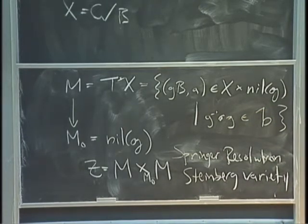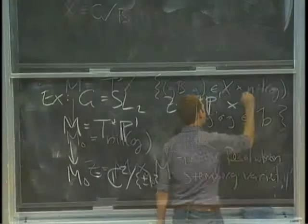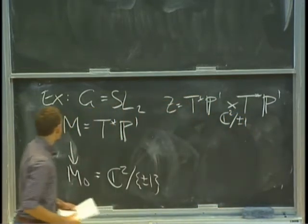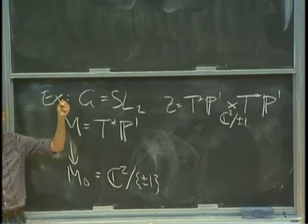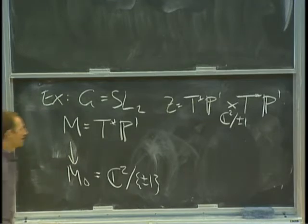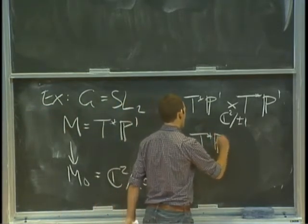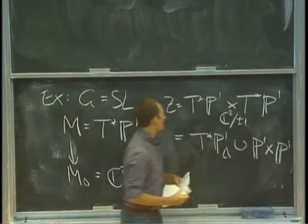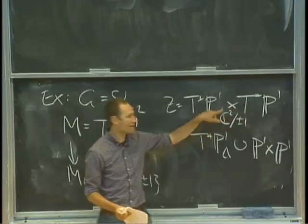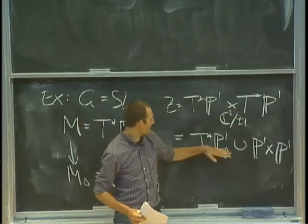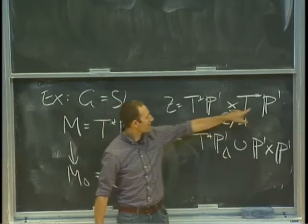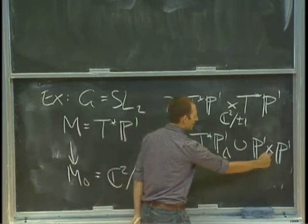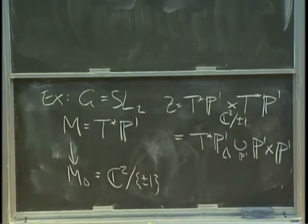In the SL2 example, Z is T* P1 cross T* P1 over C2 mod plus or minus 1. The map from M to M0 takes the zero section P1 and collapses it, and otherwise it's one-to-one. The fiber product means something in here and something in here that go to the same place — either they're the same element, or both lie in the zero section and get collapsed to the cone point. So we get T* P1 union P1 cross P1, touching along the diagonal copy of P1.